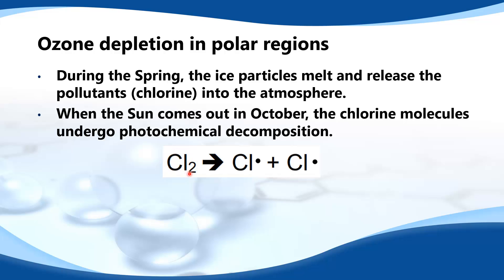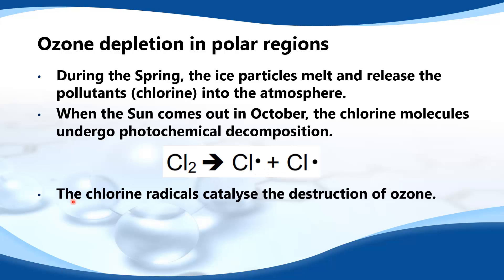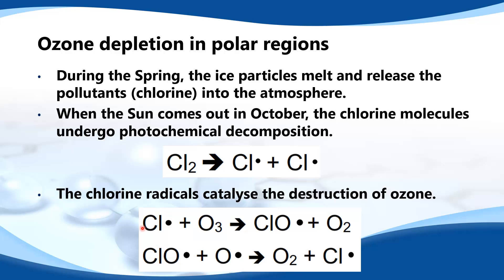This means that the bond between the two chlorine atoms is broken in the presence of UV light to form two chlorine radicals. The chlorine radicals catalyze the destruction of ozone. Here we have the equations for the destruction of ozone by the chlorine radicals. As you can see, at the end the chlorine radical is reformed, which allows it to destroy more ozone.